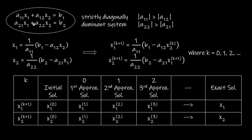For the system to be strictly diagonally dominant, the absolute value of the leading diagonal entry of each row must be greater than the sum of the absolute values of the other coefficients in that row. For this two-equation system, the absolute value of a11 must be greater than the absolute value of a12, and the absolute value of a22 must be greater than the absolute value of a21.